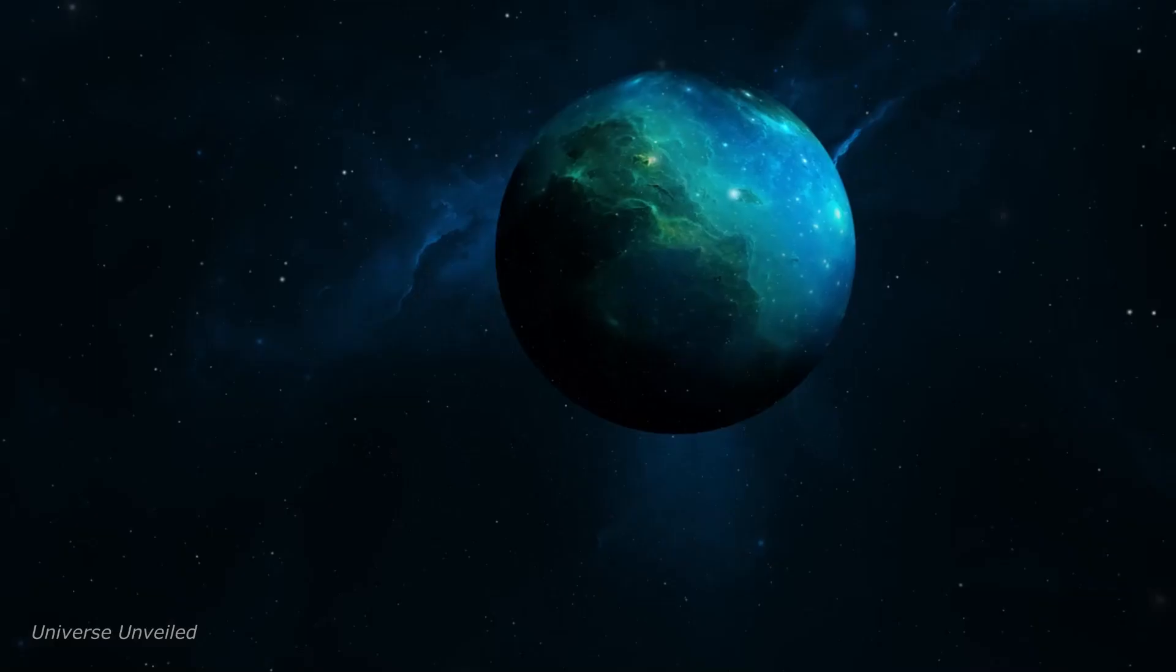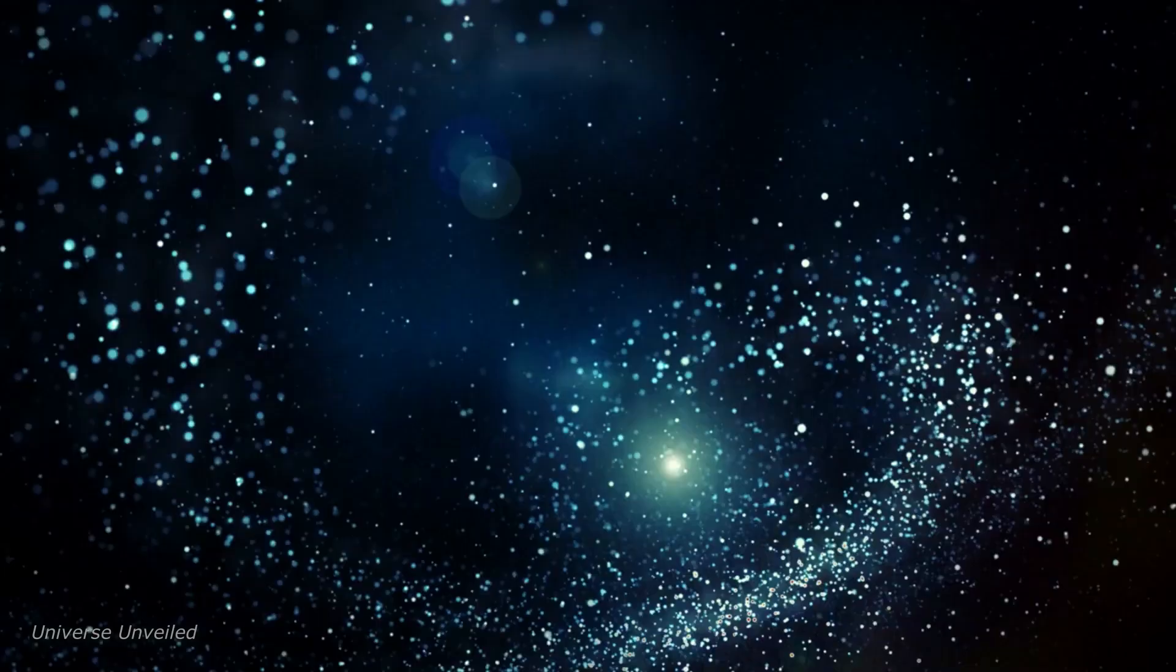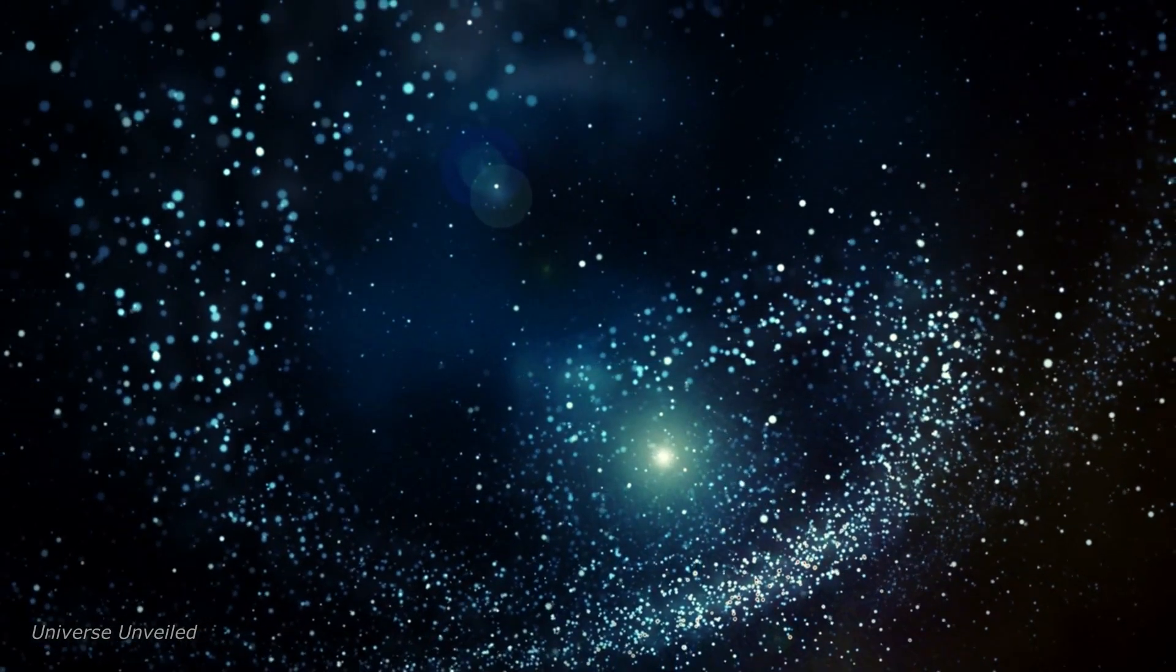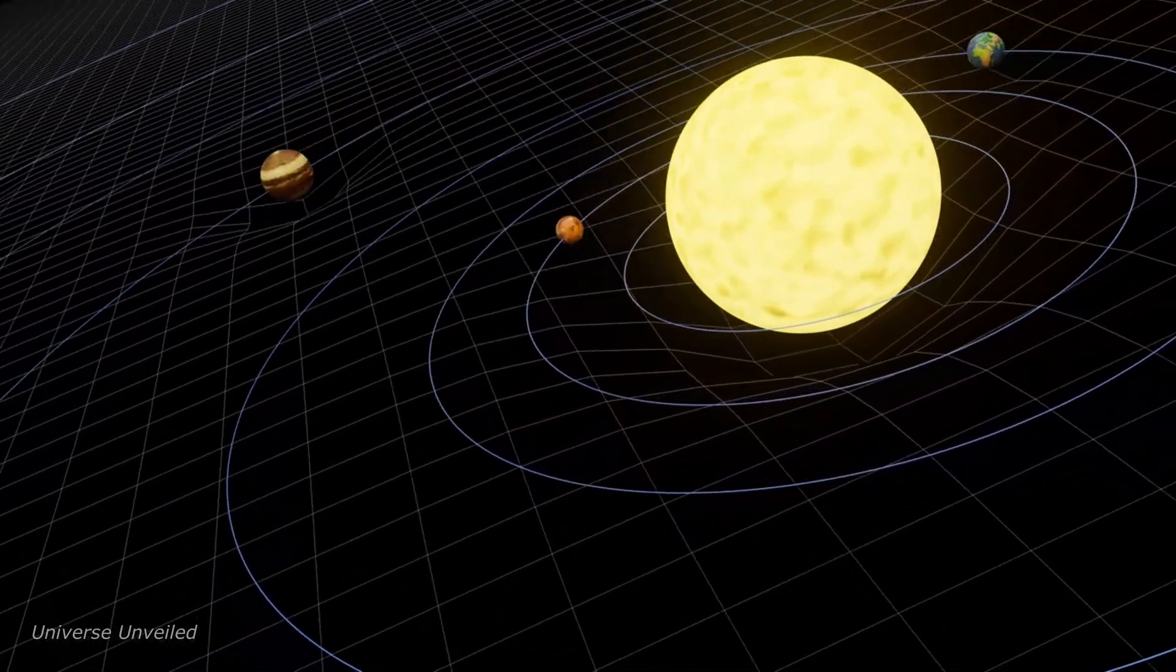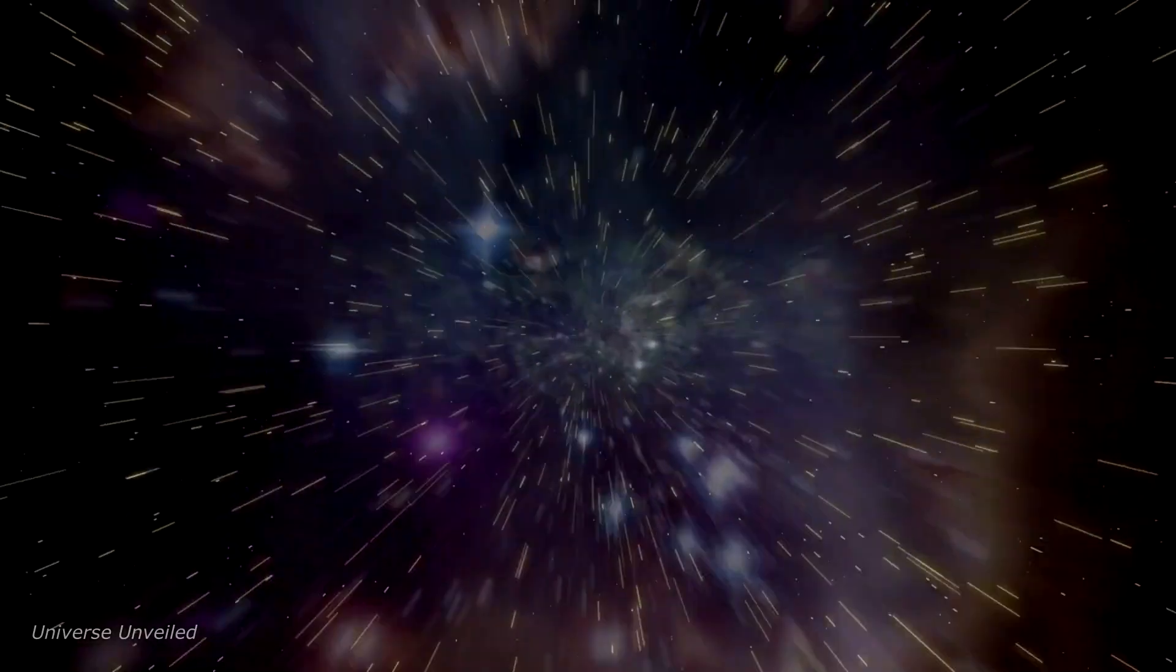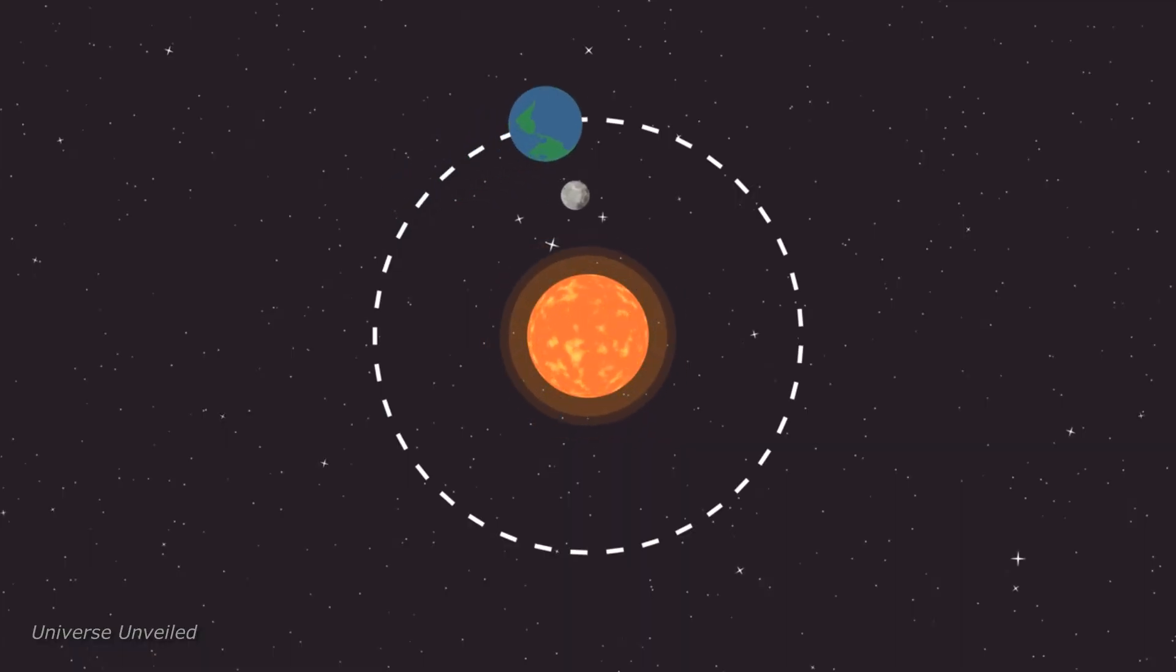In 2017, an interstellar object named Oumuamua passed through our solar system, sparking scientific curiosity due to its unique characteristics. This strange interstellar visitor wasn't just a fleeting curiosity, but a treasure trove of information that has intrigued scientists around the globe.